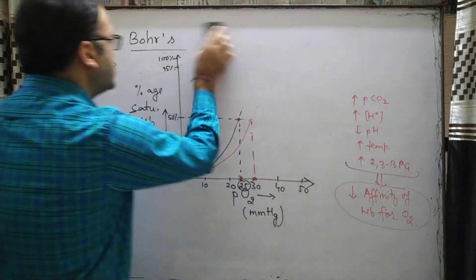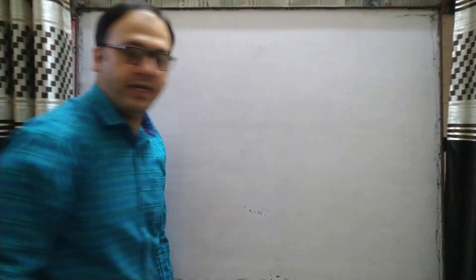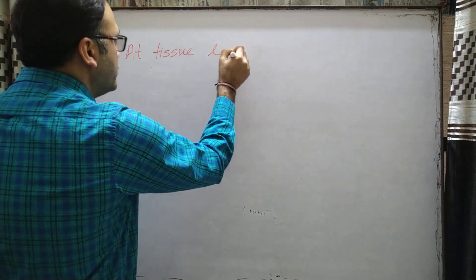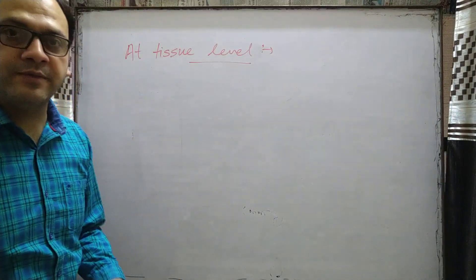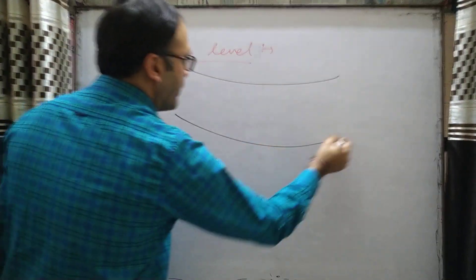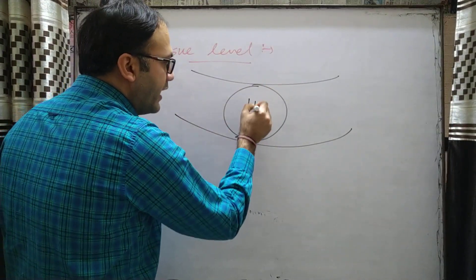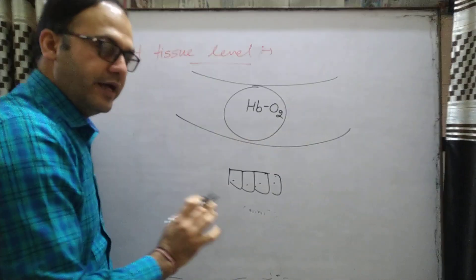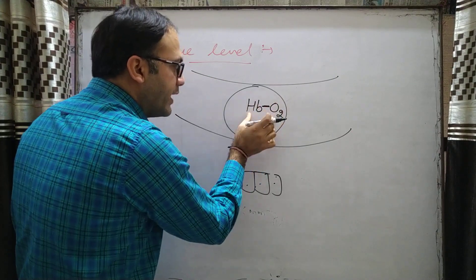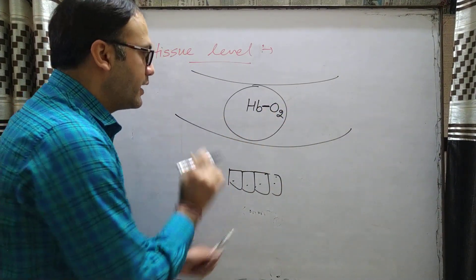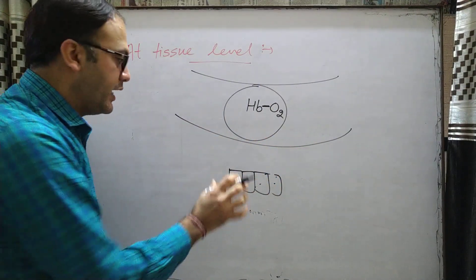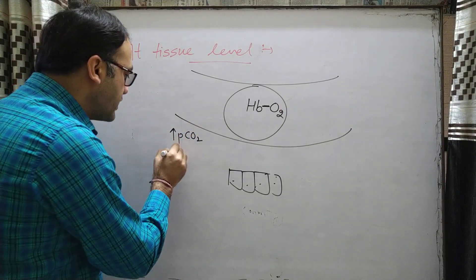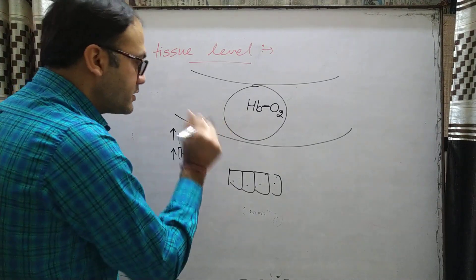The significance of the Bohr effect is seen at the tissue level. At the tissue capillary, we have RBCs containing hemoglobin with oxygen bound to it, and the tissues require oxygen. At the tissue level, all the Bohr effect conditions are present: cellular respiration liberates CO2, so there is higher partial pressure of CO2 and higher H+ concentration.